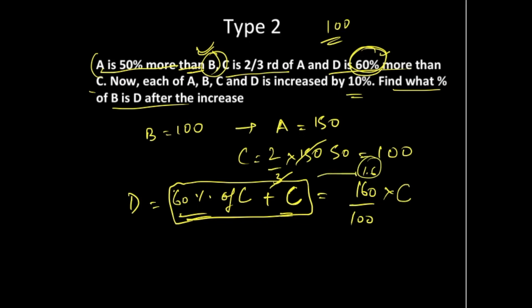Rather than adding it to the original C, you can directly write the factor of 1.6, or 160/100. Since C is 100, D becomes 160. Now we have all the values: A equals 150, B equals 100, C equals 100, and D equals 160.